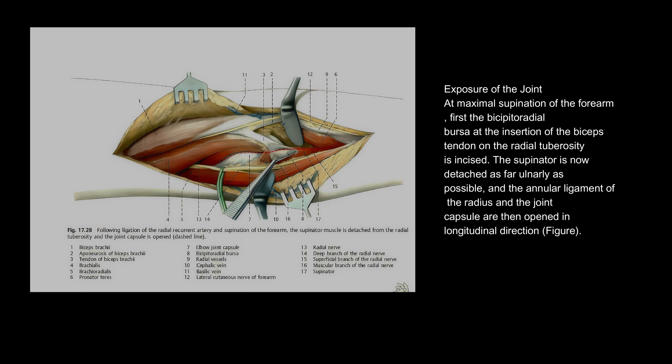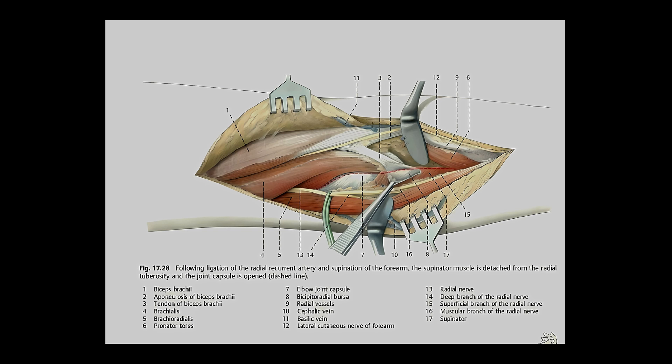Exposure of the joint at maximal supination of the forearm: first, the bicipitoradial bursa at the insertion of the biceps tendon on the radial tuberosity is incised. The supinator is now detached as far ulnarly as possible, and the annular ligament of the radius and the joint capsule are then opened in a longitudinal direction.